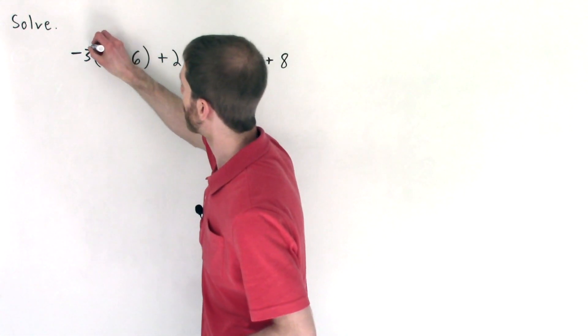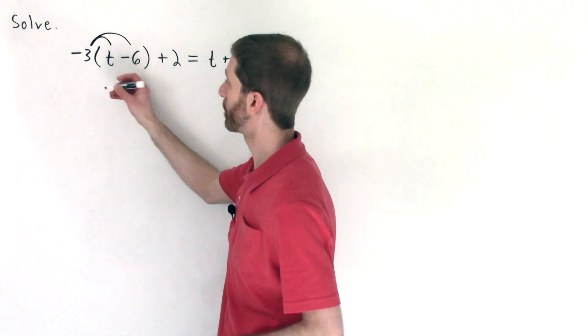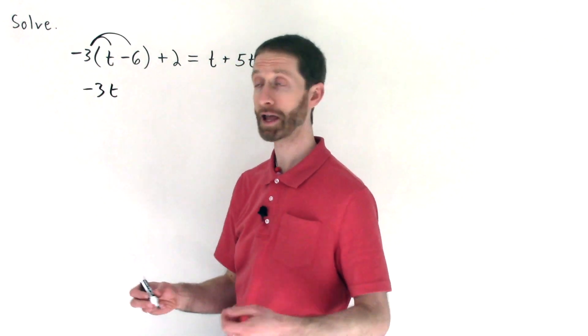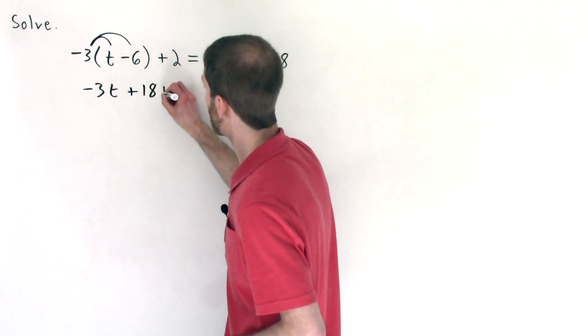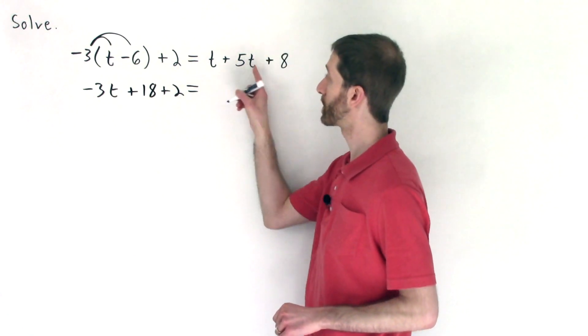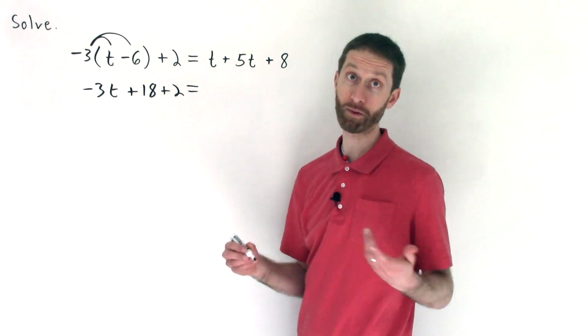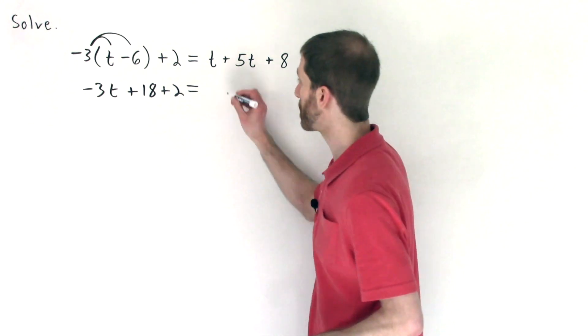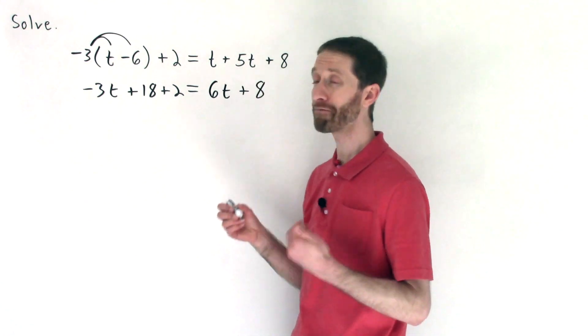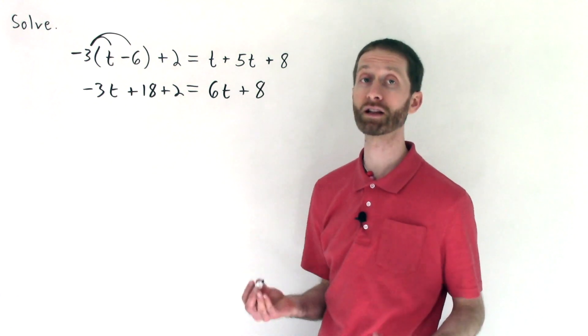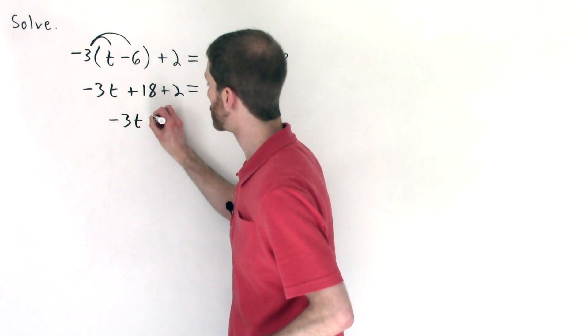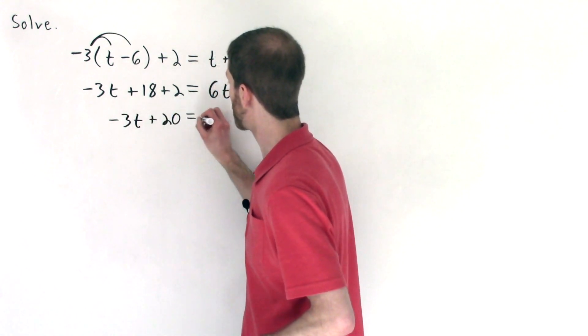So I'm going to distribute negative 3 to both the t and the minus 6. Negative 3 times t is negative 3t. Negative 3 times negative 6 is a positive 18. And then we just copy everything on the left-hand side. On the right-hand side, I have more I can simplify. I have t plus 5t. That would be, combining like terms, 6t. Beautiful. So I have 6t plus 8. And I yet have more that I can simplify. So keep simplifying until there's nothing left that we can combine. 18 plus t is going to be 20.